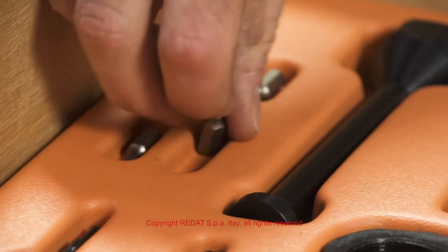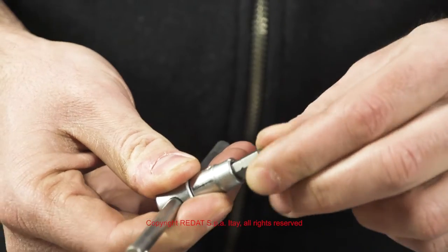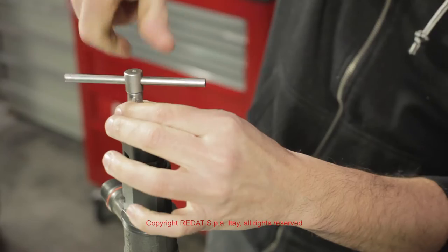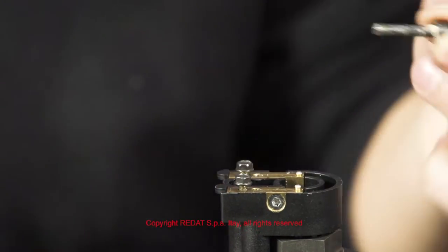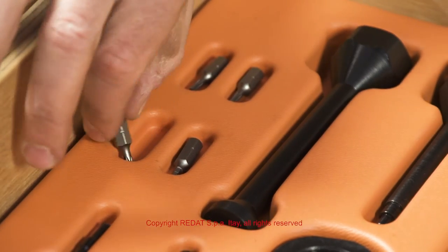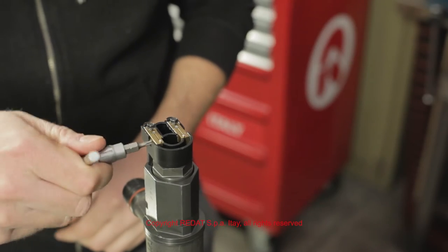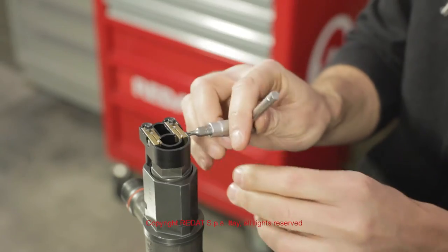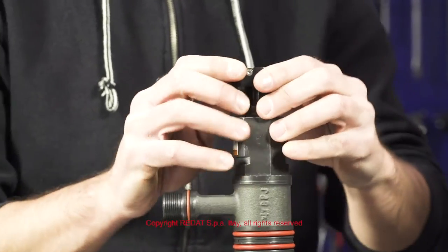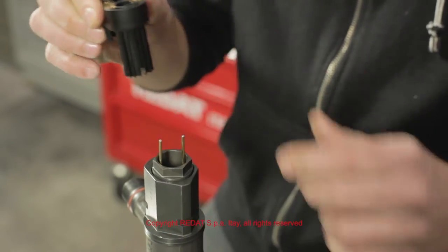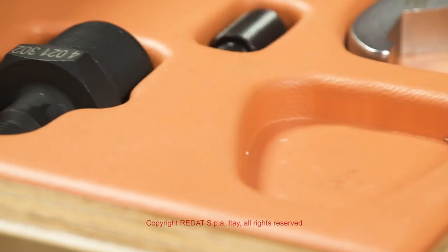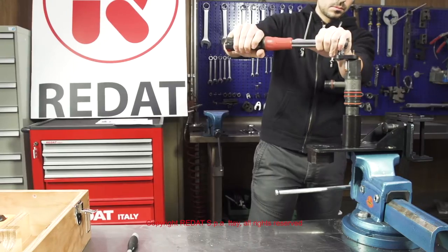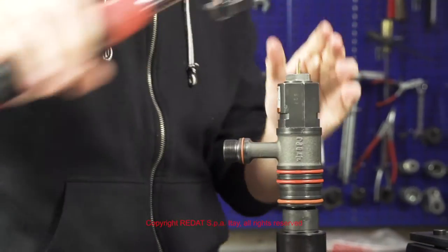We unscrew the center screw using the 4021077 insert and loosen the two lateral screws with the 4021167 insert. Then we take off the black plastic part and unscrew the ring nut using the 4021772 wrench.